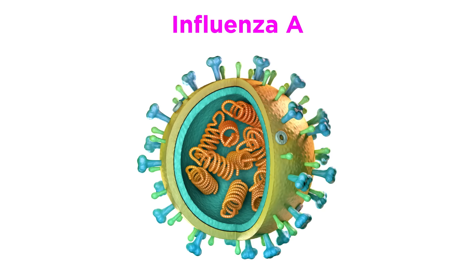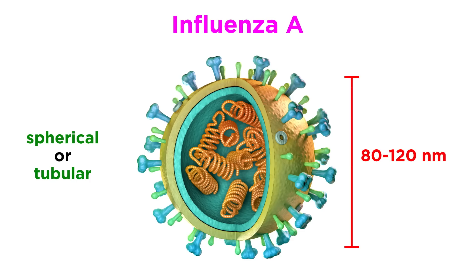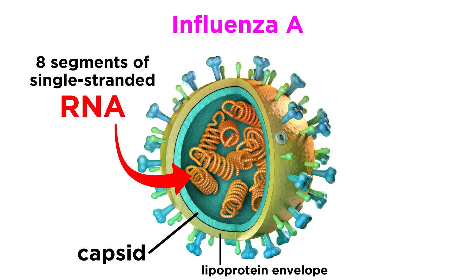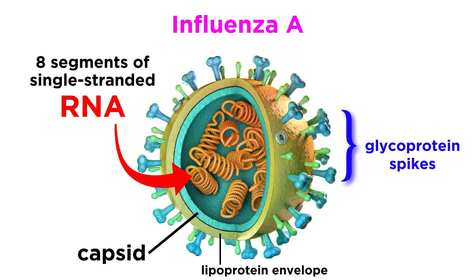Since influenza A causes the most serious disease, we'll focus on the details of that one here. Influenza viruses themselves can be spherical or tubular in shape, ranging in diameter from 80 to 120 nanometers or so. Influenza A has eight segments of single-stranded RNA, which are enclosed in a protein capsid. The capsid is surrounded by a lipoprotein envelope that it gets from the host cell membrane during the maturation step of replication, and that lipoprotein has glycoprotein spikes poking out all around.